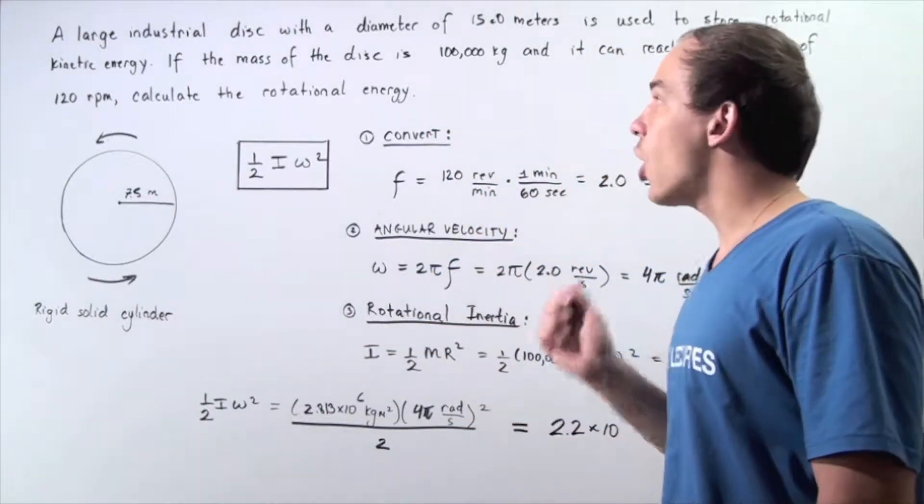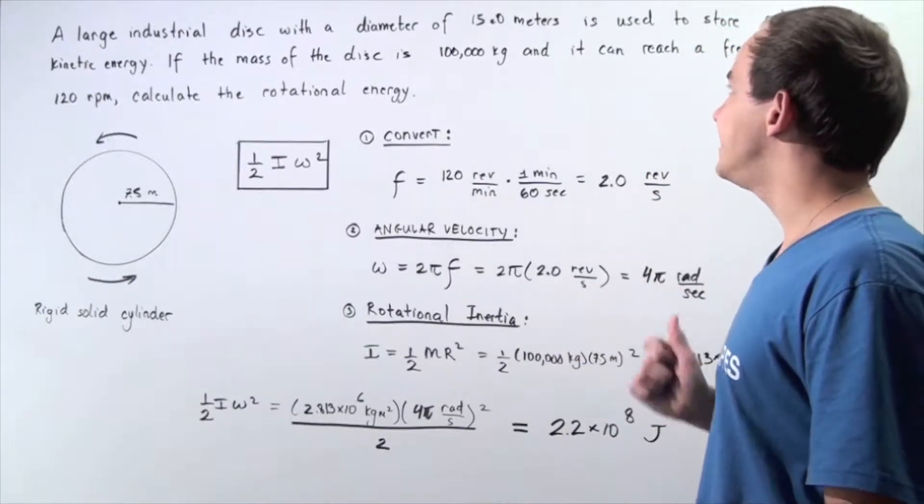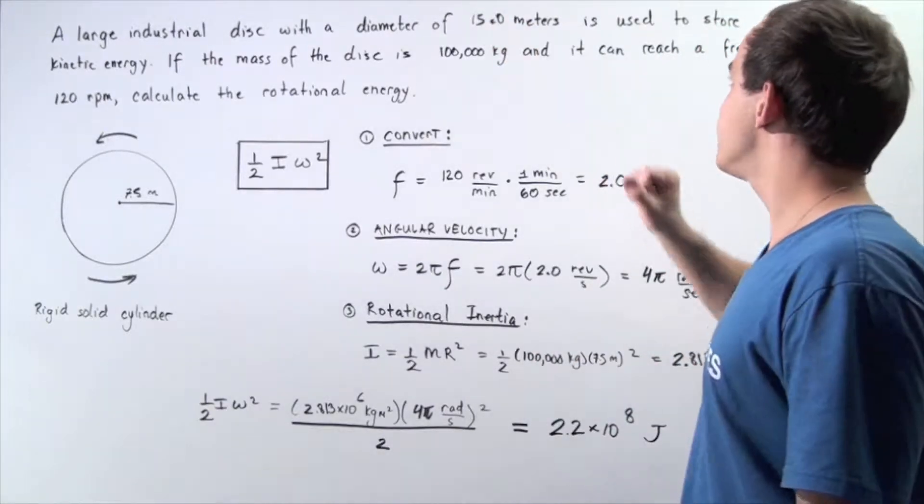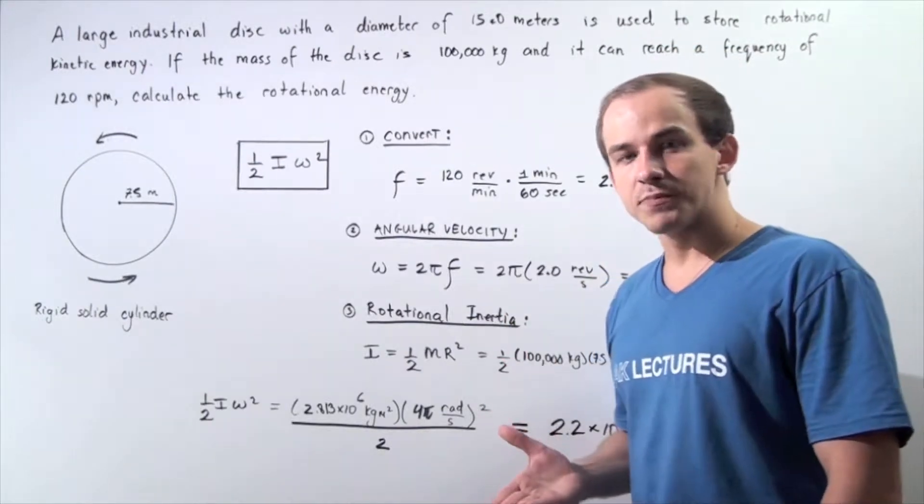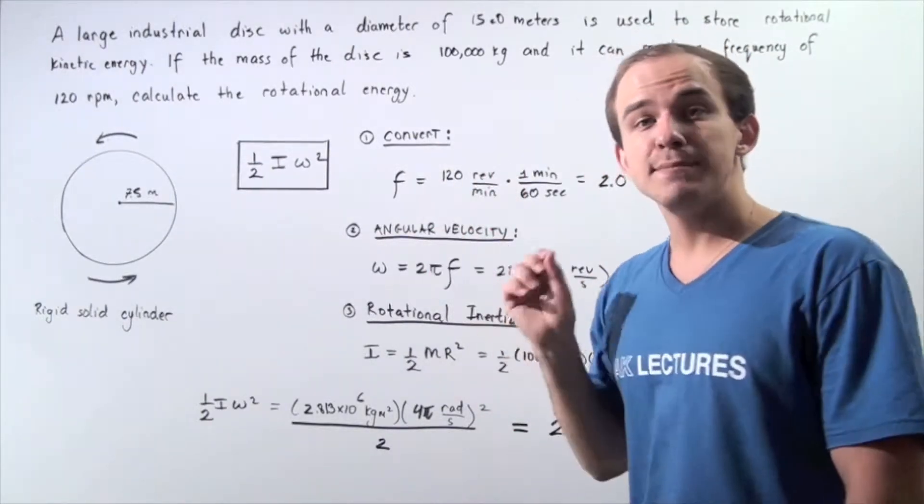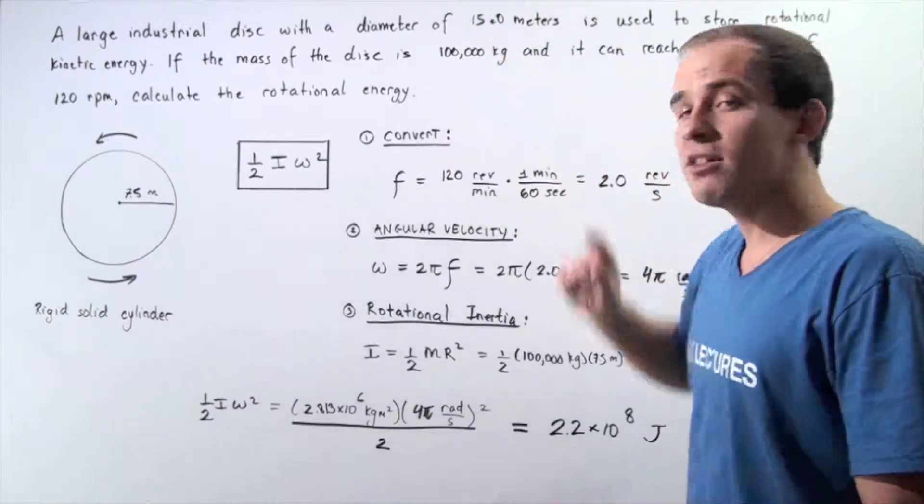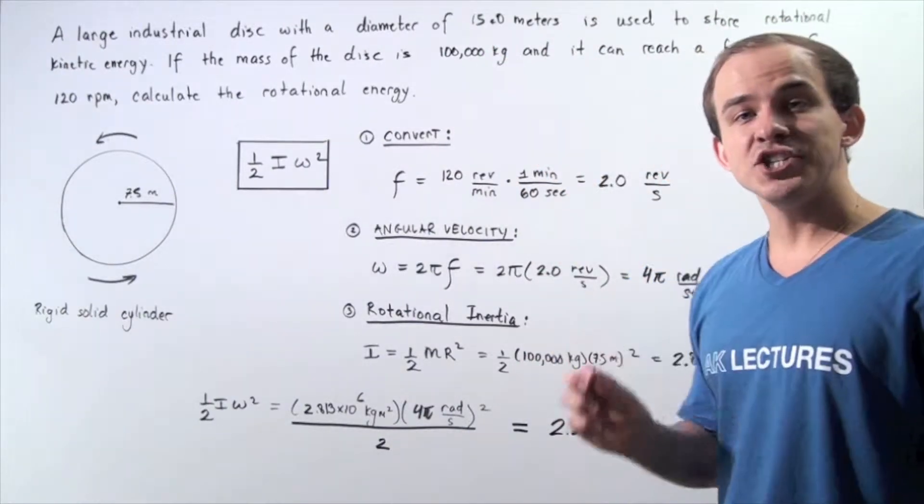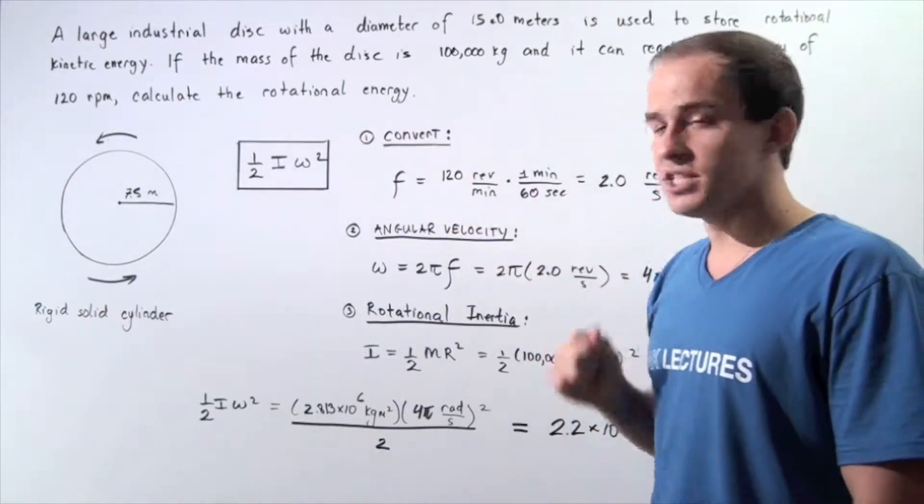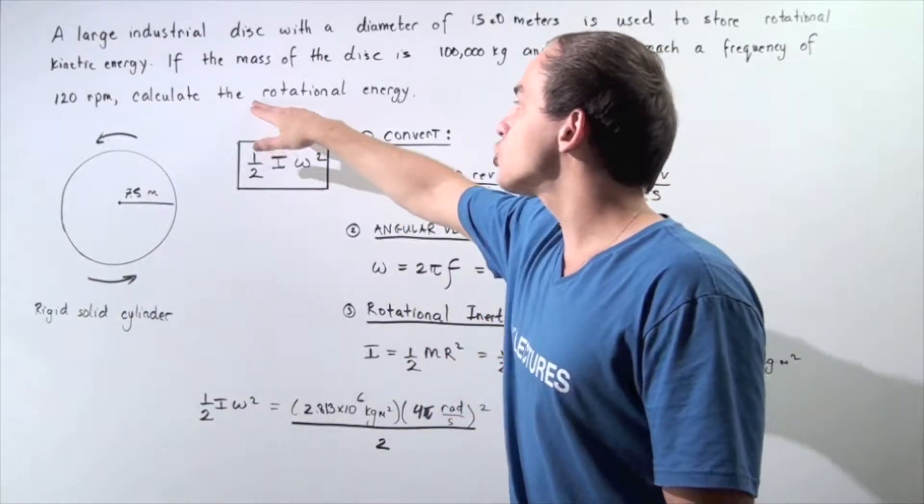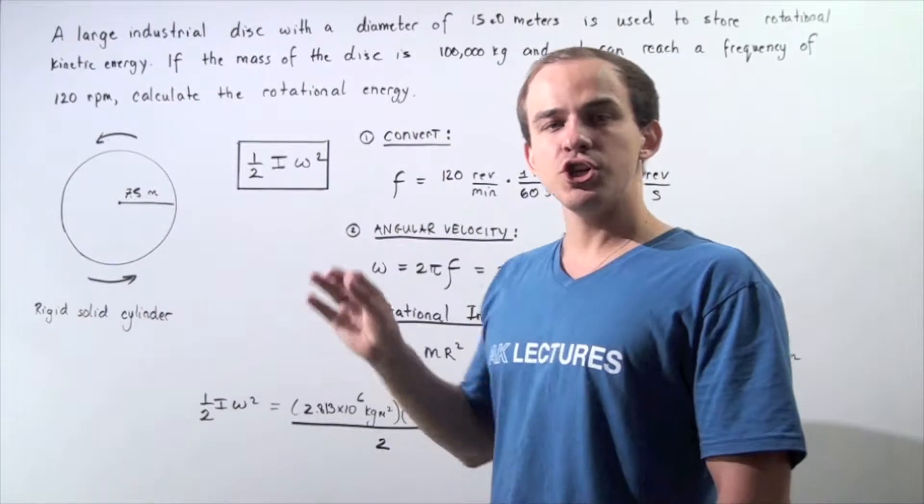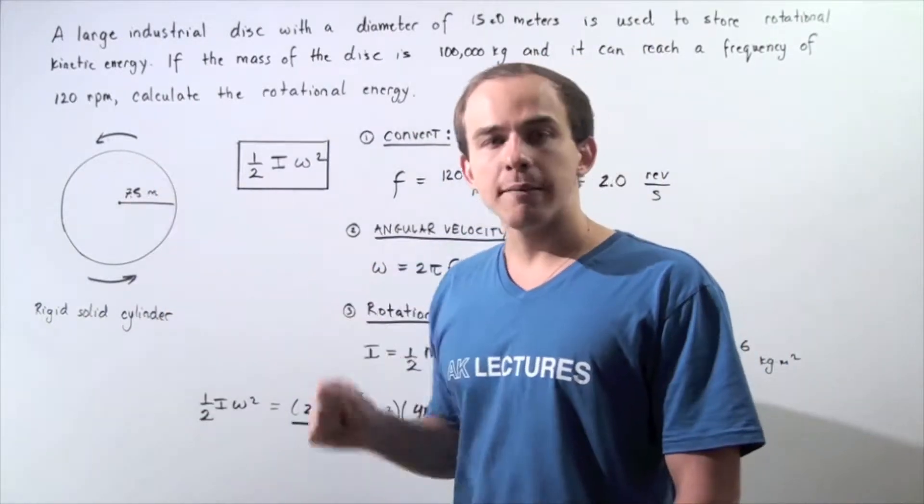Let's suppose that a large industrial disk with a diameter of 15 meters is used to store rotational kinetic energy. Now, if the disk has a mass of 100,000 kilograms and it can reach a frequency of 120 revolutions per minute, let's calculate how much rotational kinetic energy is stored in our object.